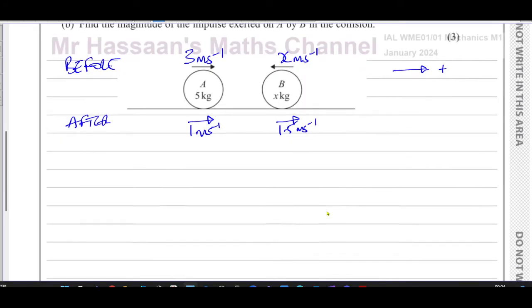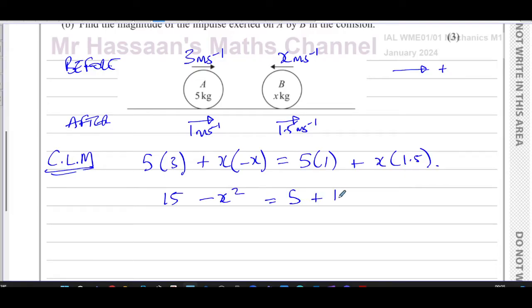Now we're going to set up our conservation of linear momentum. You have to be very careful about the fact that we're taking this direction to the right as positive, so be careful about your signs. The total momentum before would be the mass times velocity of A, which is 5 times positive 3. Always think about the signs when you're doing this. And B is going to be X times negative X, because this X is in this direction. That equals the total momentum after, which is 5 times positive 1 plus X times positive 1.5.